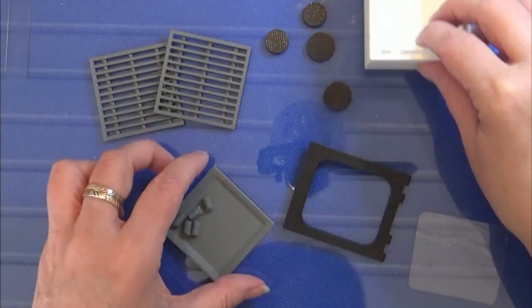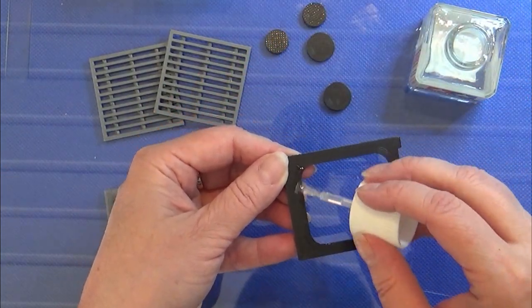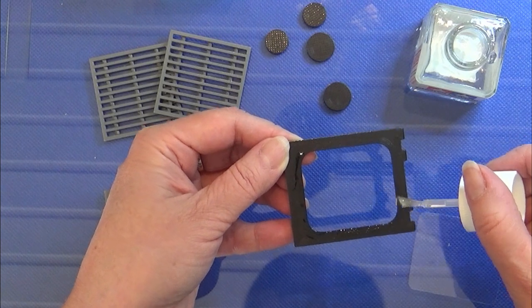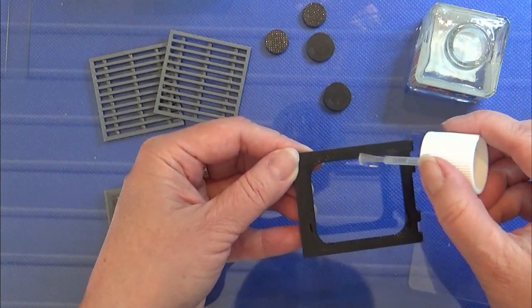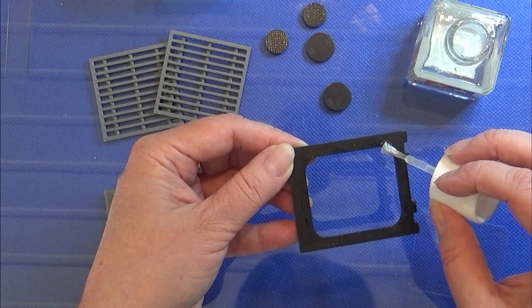And now for the oven, the stove. I cut out a piece of clear packaging for the window in the stove door, and I'm gluing it on the back side of the door.